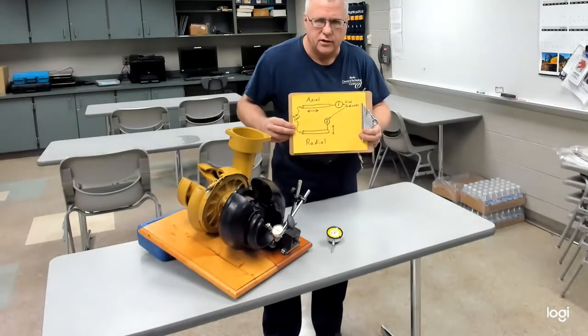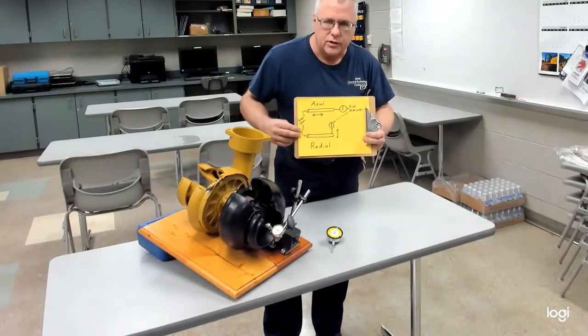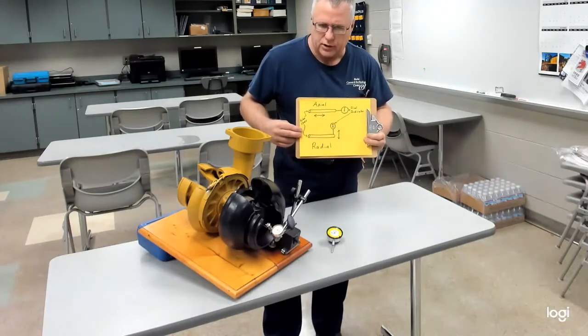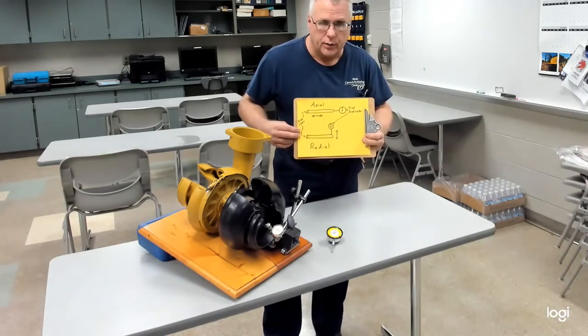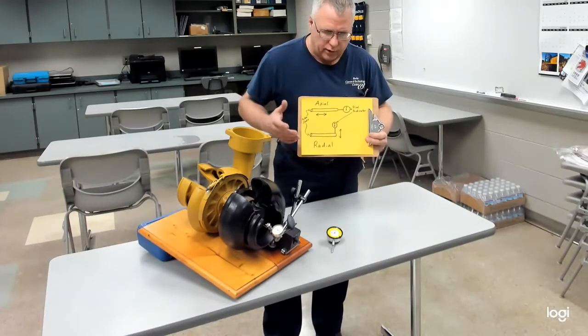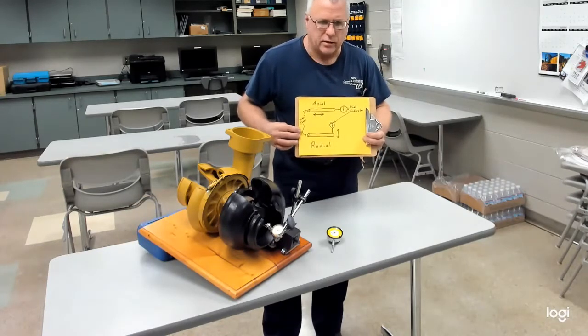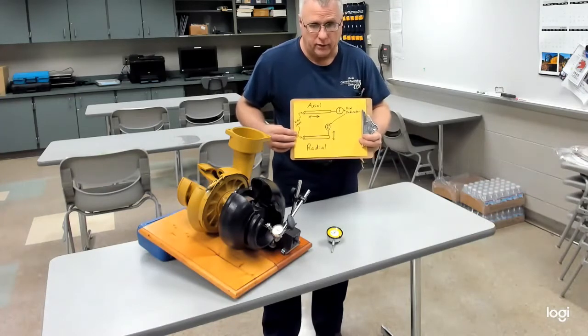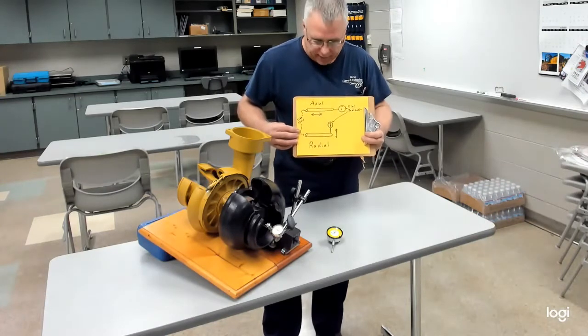So first off, let's explain what we're measuring here. Through the center of the turbocharger there is a shaft that connects the turbine wheel and the compressor wheel. They are connected solid, and when one spins the other spins. There has to be a little bit of movement up and down and end to end, and that's what we're going to measure.